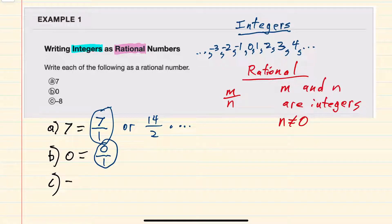For c, we have a negative number, negative 8, but here as well, negative 8 is an integer. And if we write negative 8 as negative 8 over 1, now we can see that we've written it as a fraction with integers in the numerator and denominator.